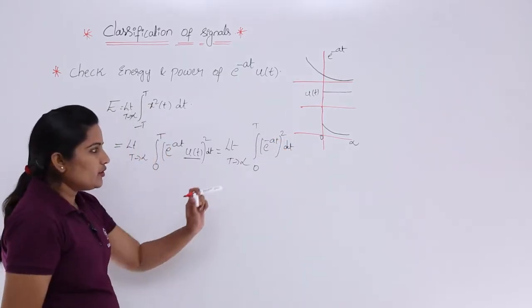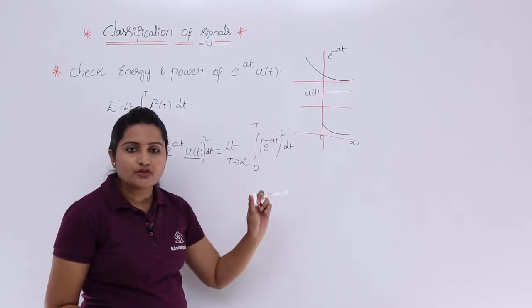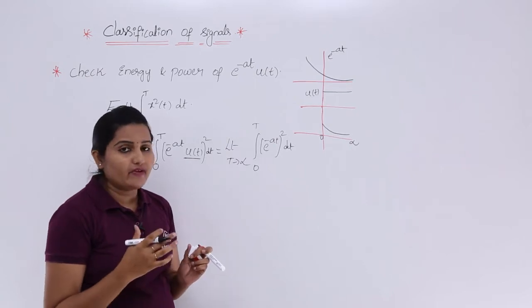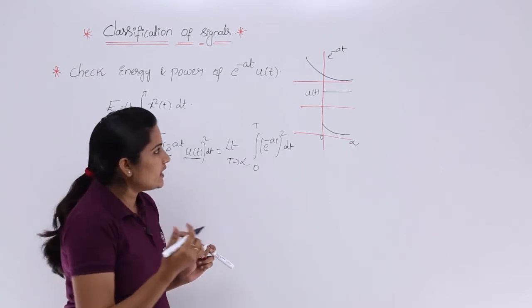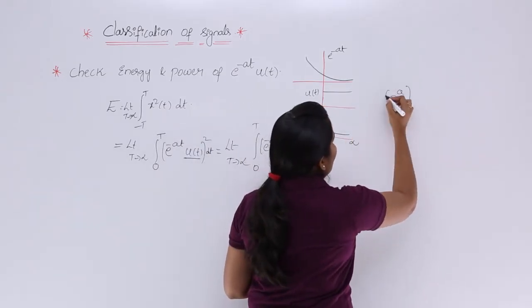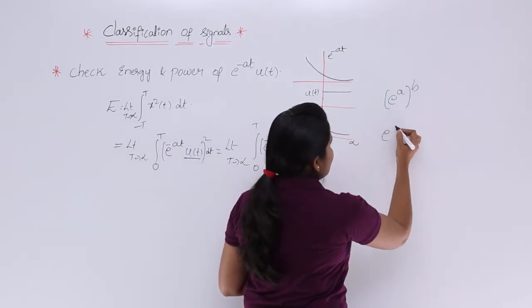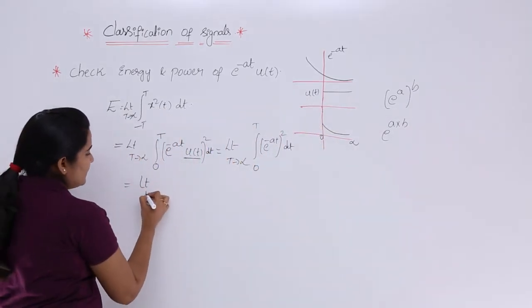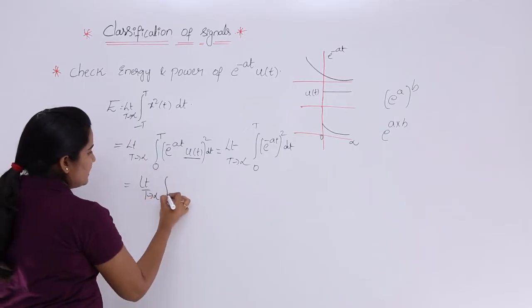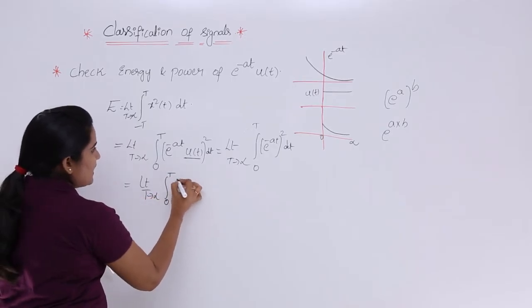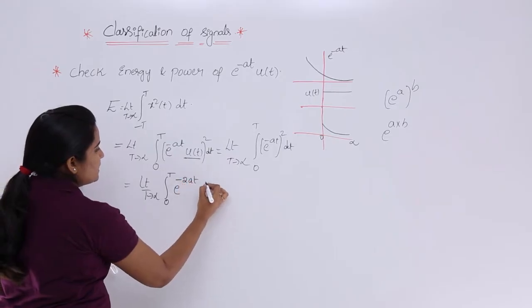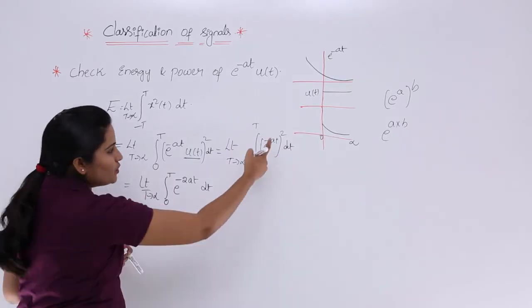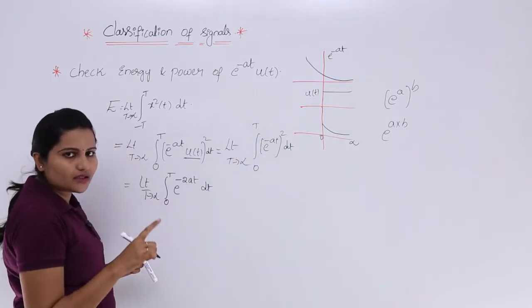This integration becomes limit T→∞ of the integral from 0 to T of [e^(-aT)]² dt. Whenever you have e^(-aT) whole square, do not write it as e^(aT²) or e^(a²T²). Using the rule e^(A)^B = e^(A×B), you can write e^(-aT) whole square as e^(-2aT). The 2 multiplies the exponent, it does not square the power.